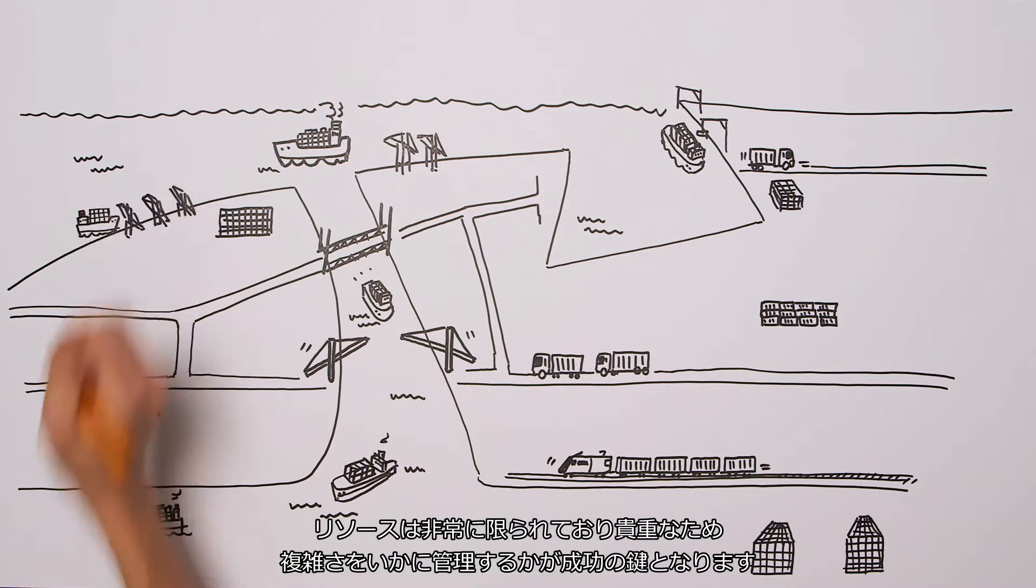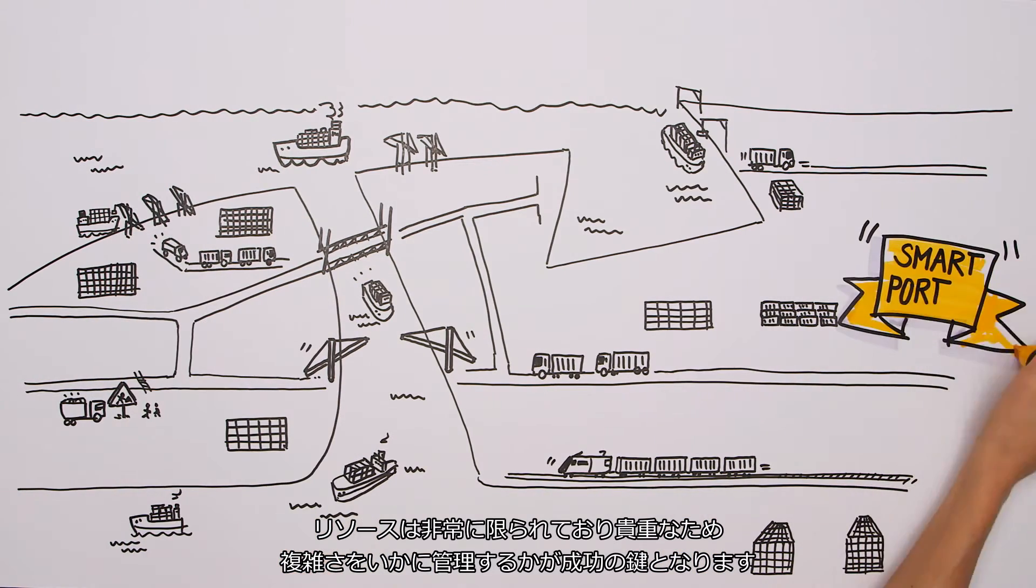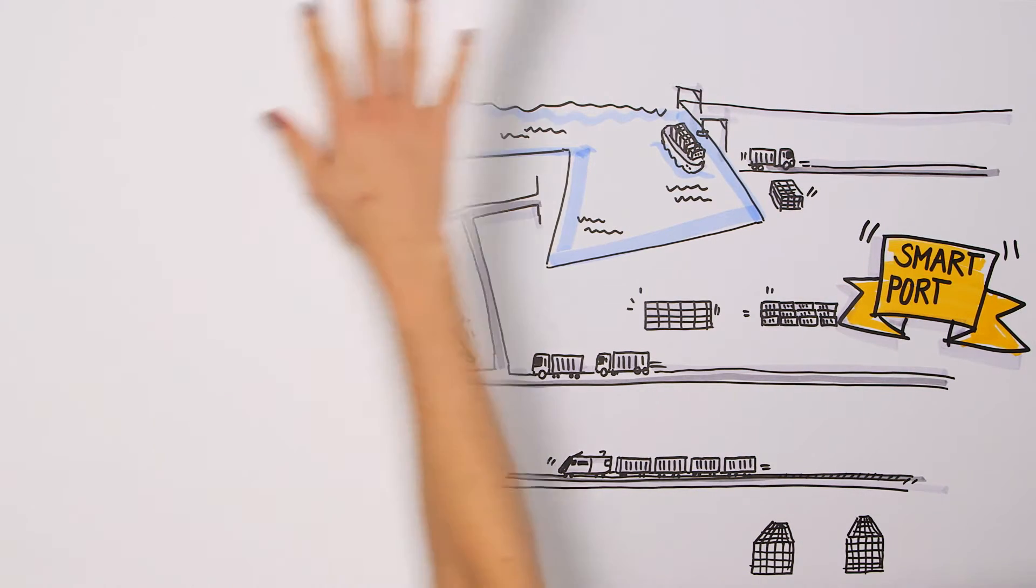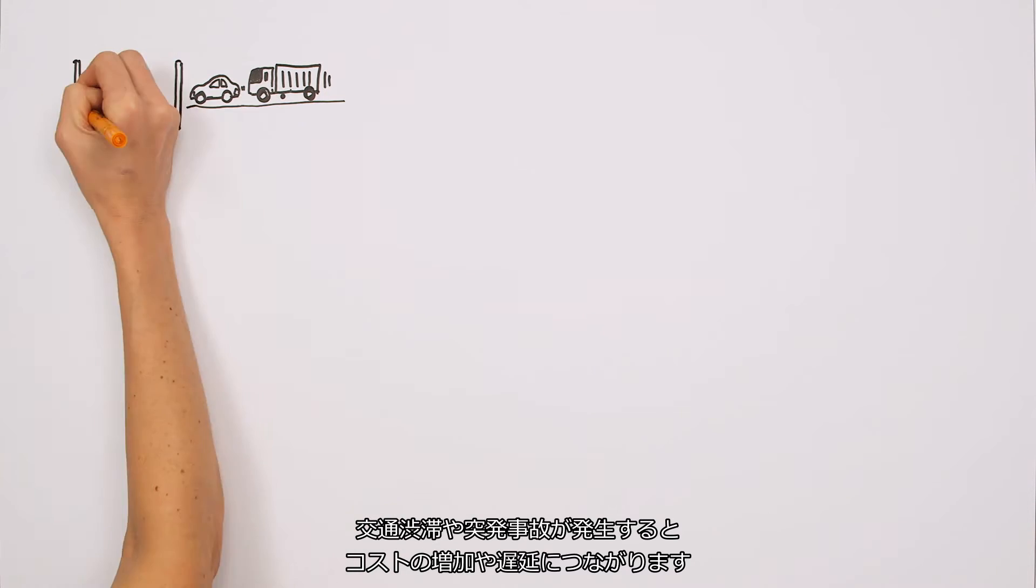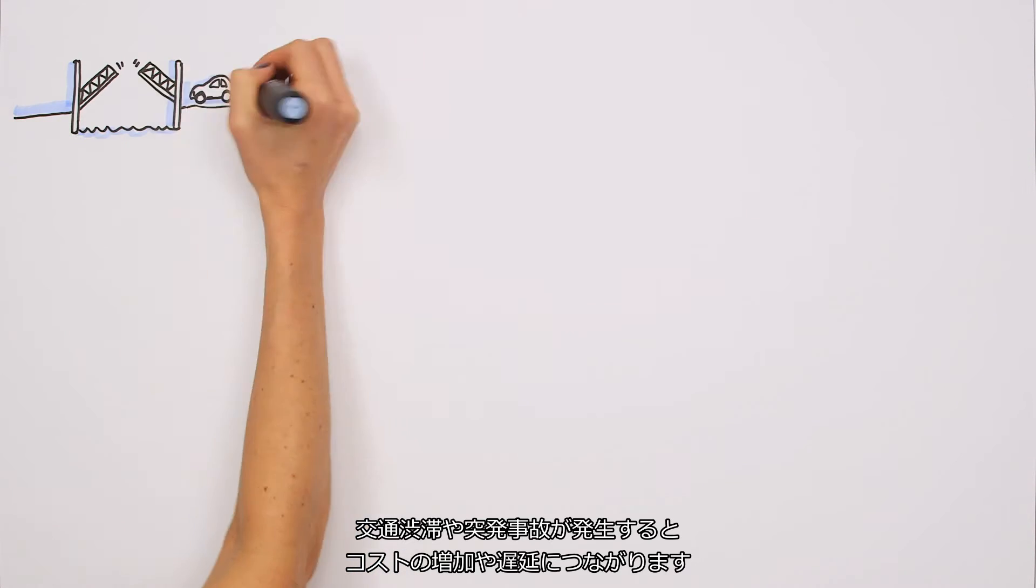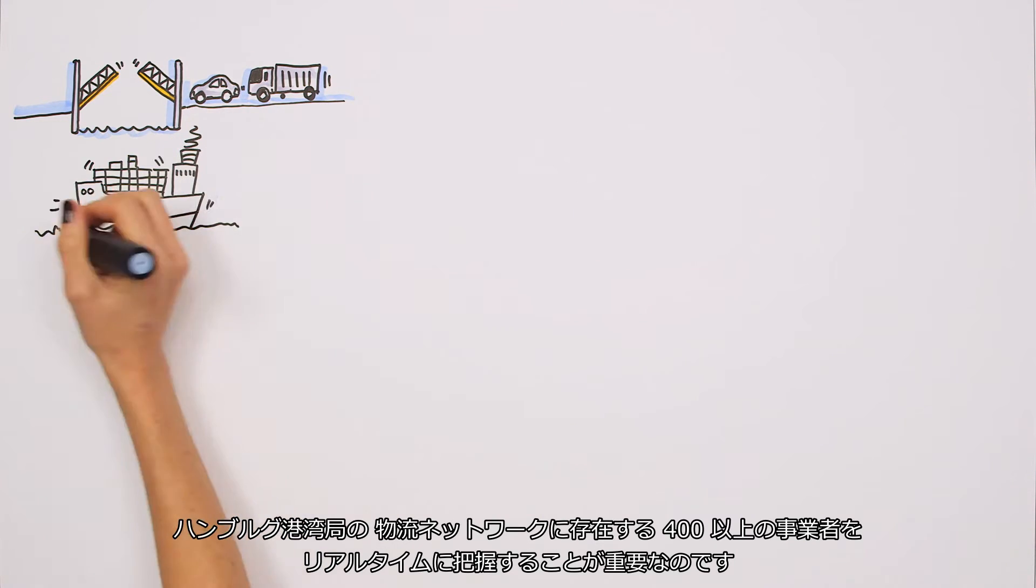Managing complexity is key to a successful expansion strategy as resources are very limited and valuable. Any traffic jams and unforeseen incidents may result in increased costs and delays. Therefore, real-time visibility across more than 400 entities in the HPA Logistics Business Network makes the difference.